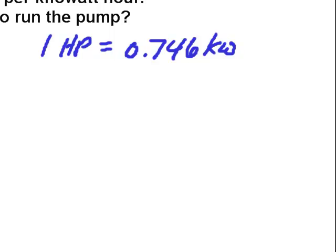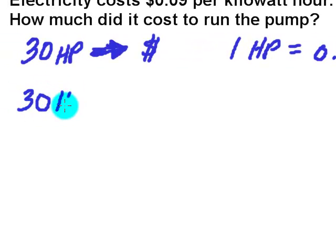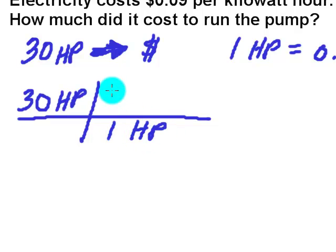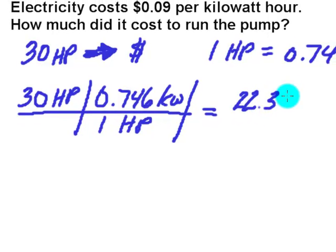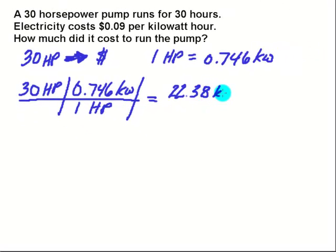The first thing that we have to do is convert horsepower into kilowatts. So I've got my 30 horsepower, drawing the backbone of my track here. And for every one horsepower there are 0.746 kilowatts. So if I make that conversion, I find that my pump didn't really use 30 horsepower. What it used was 30 times .746 or 22.38 kilowatts.